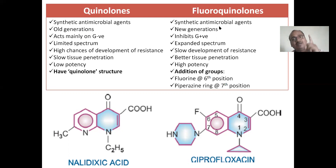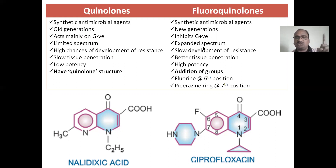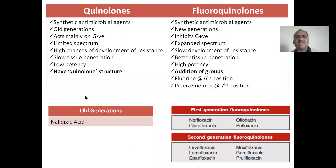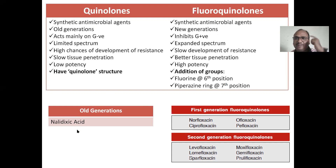Fluoroquinolones are also synthetic antimicrobial agents but these are the new generations. Inhibits gram-positive as well — expanded spectrum. Slow development of resistance. Better tissue penetration compared to quinolones. High potency. Addition of groups at sixth and seventh positions. The old generation example of quinolones is nalidixic acid. Nal — nal means tap in Hindi, if you turn on the tap, acid will come. Nalidixic acid — like that you can remember. Practice.